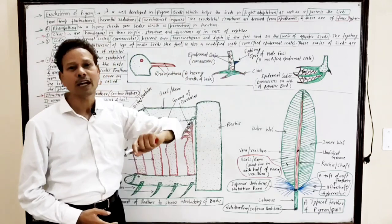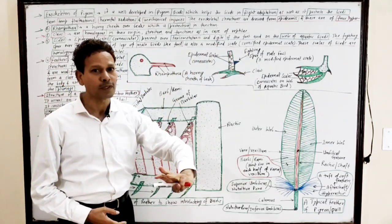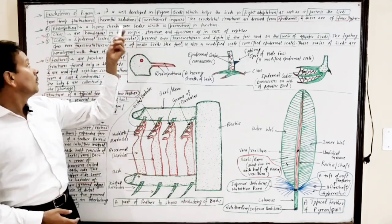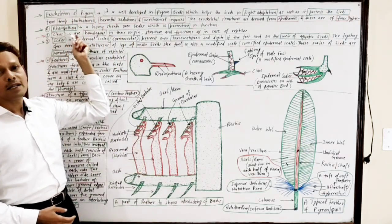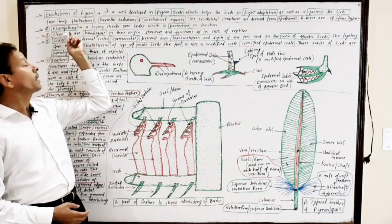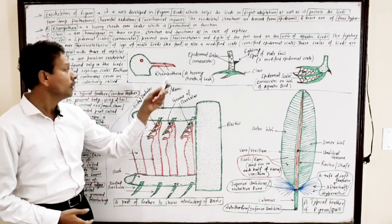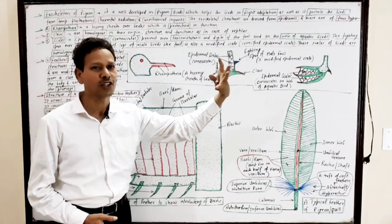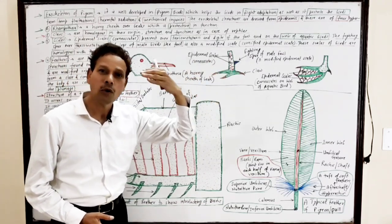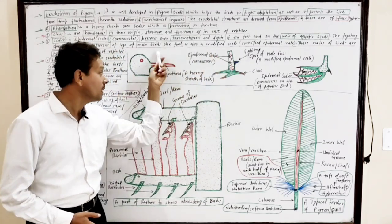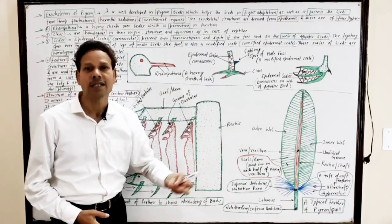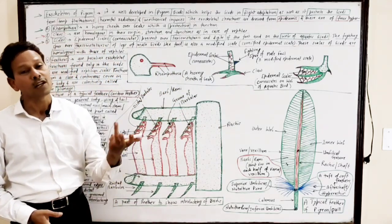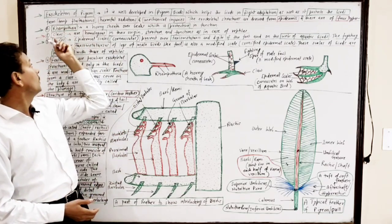These epidermal structures are of four types, and the first exoskeletal structure is rampotheca. It is a hard horny sheath which is present over the beak. This rampotheca, which covers the beak, is protective in nature.